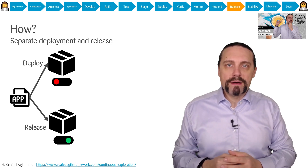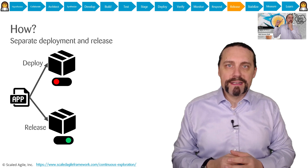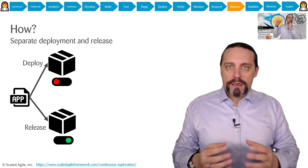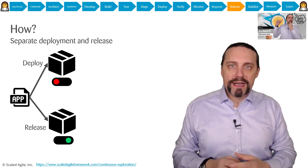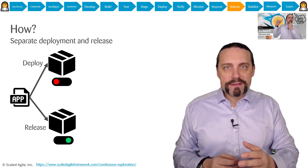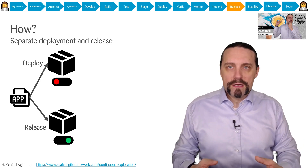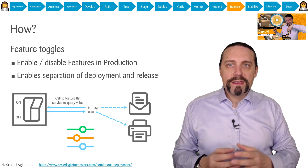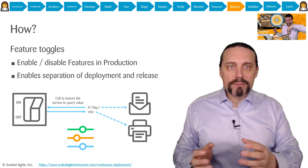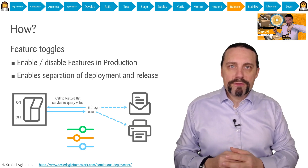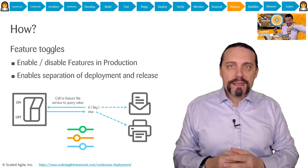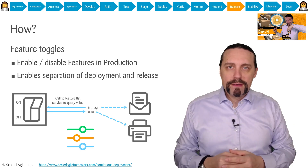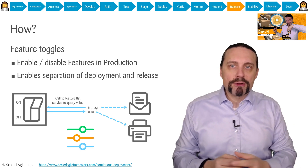We already talked about separating deployment from release in the architect step, which you can see in the video up here. A deployment is bringing the compiled code into production with the feature toggle off. A release is switching the feature toggle on. A feature toggle enables us to separate deployment from release — I've already talked about feature toggles in the deploy step, which you can see in the video up here.